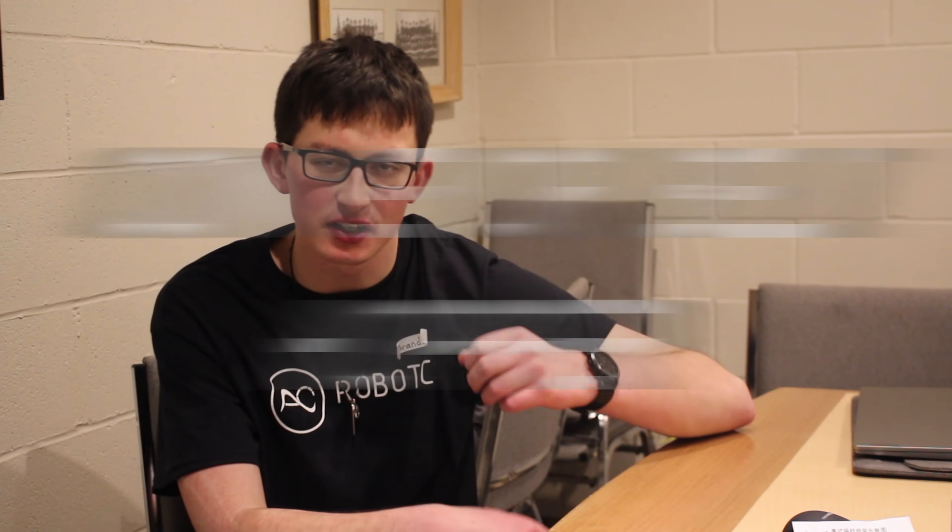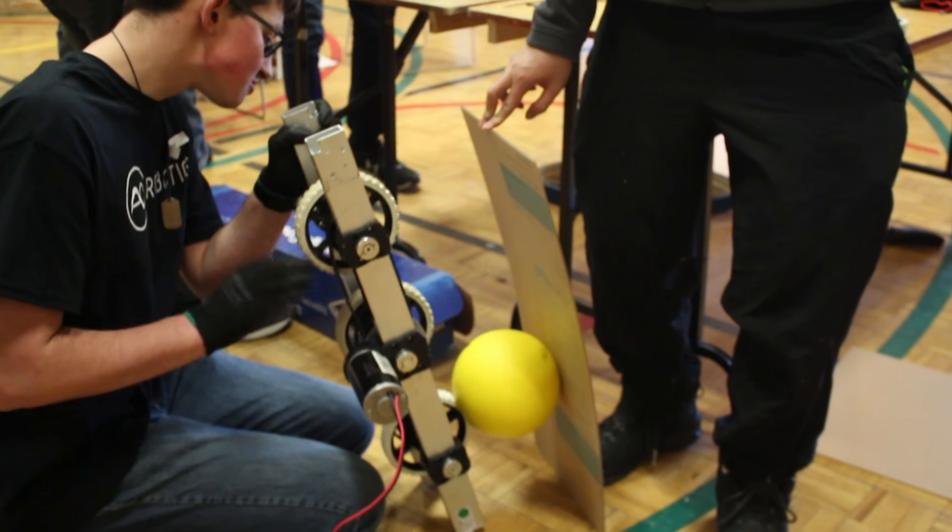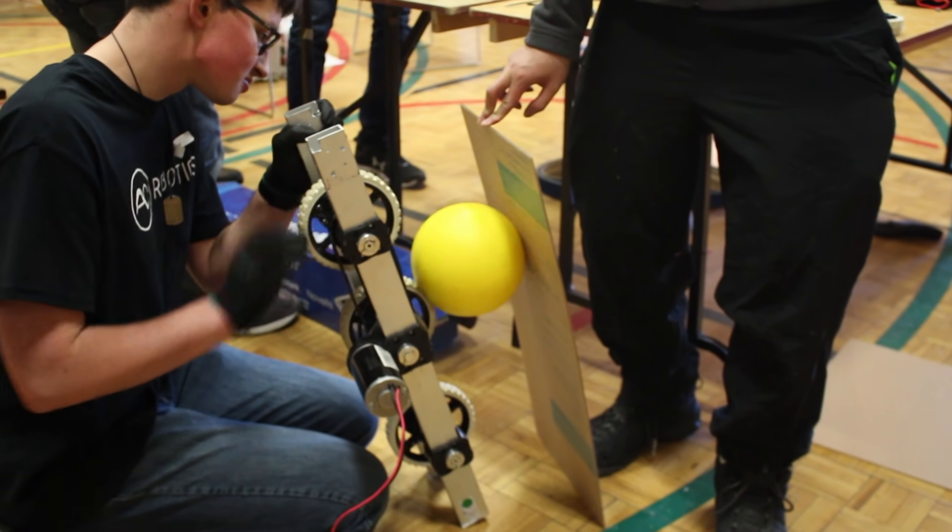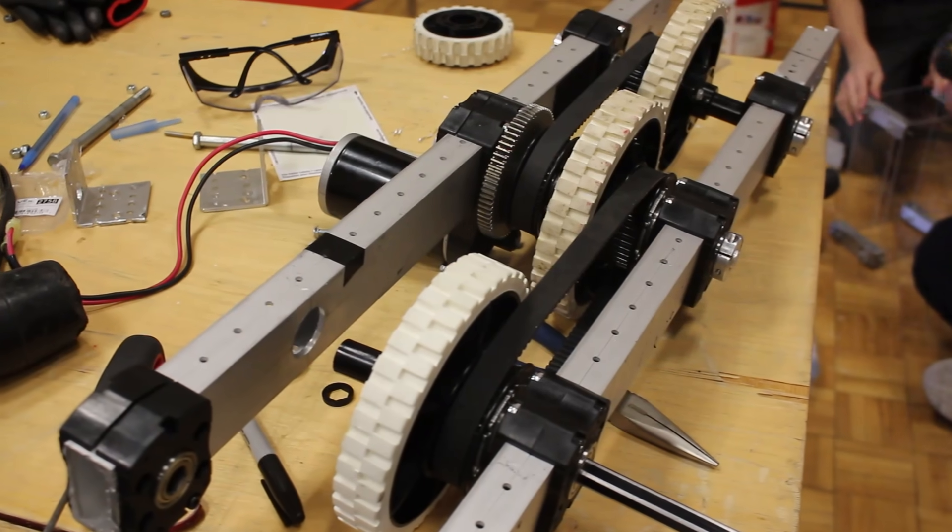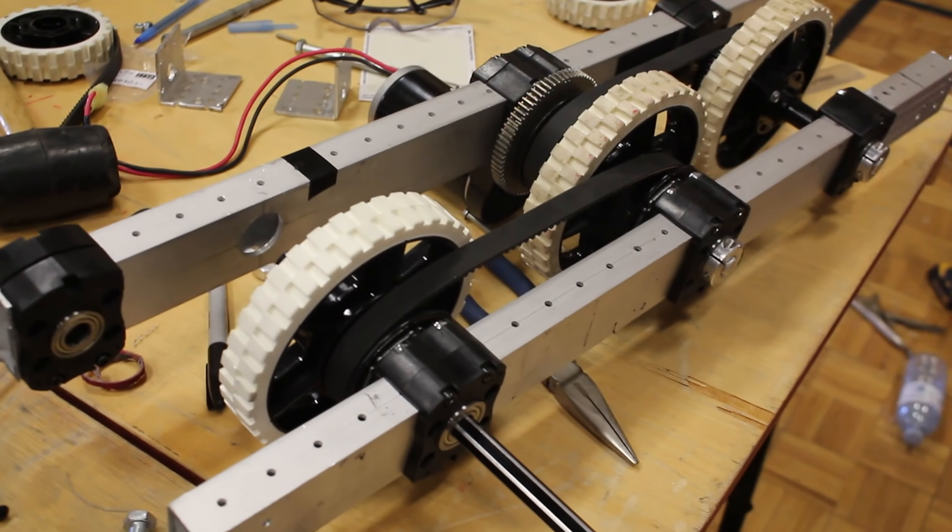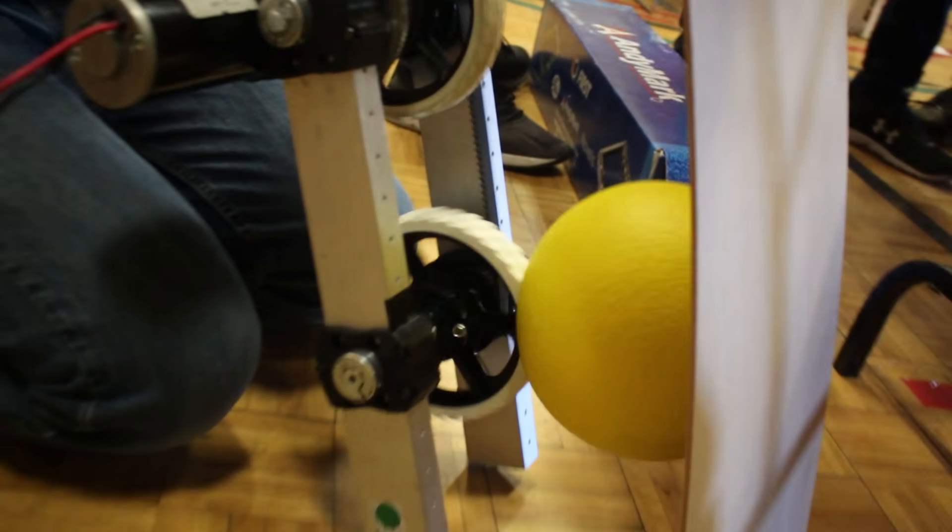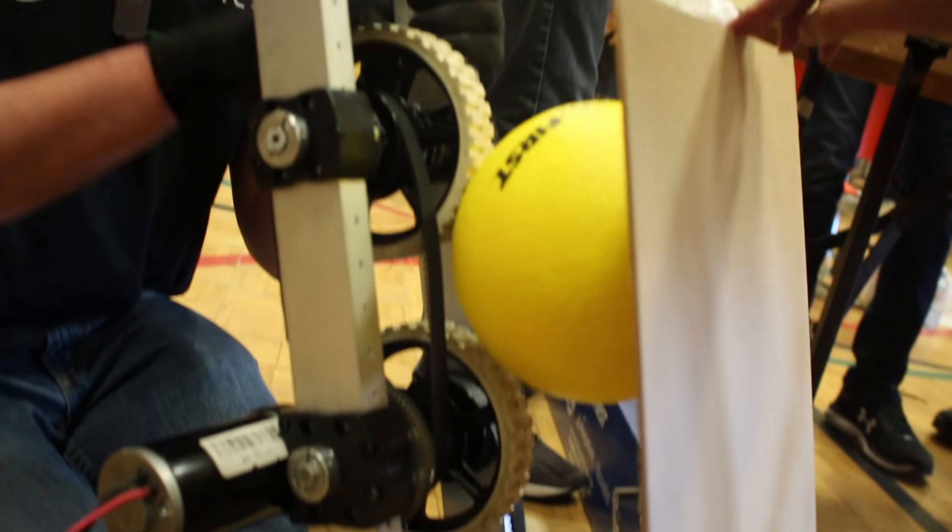I've been working on the conveyor belt hopper system. So what happens is that the intake will take the ball in off the floor, and then our hopper system is what delivers it up to the top of the robot to where the shooting mechanism is. We have three wheels driven by a motor that will pull the ball up. These will be on the back of the hopper, and then on the front of the hopper will just be a sheet of acrylic that will hold the ball in place.